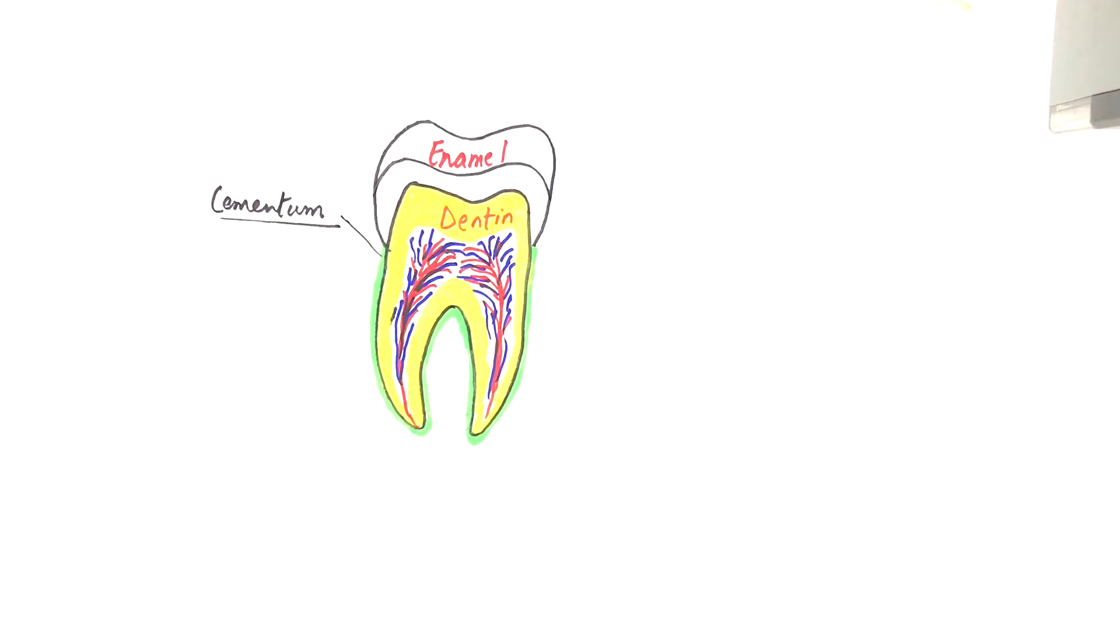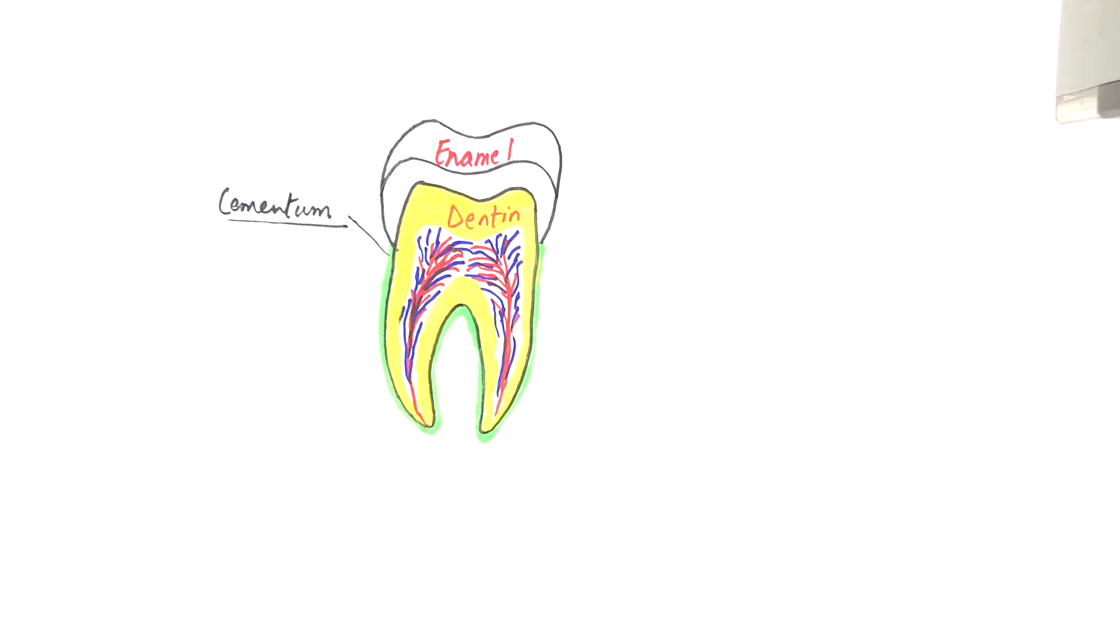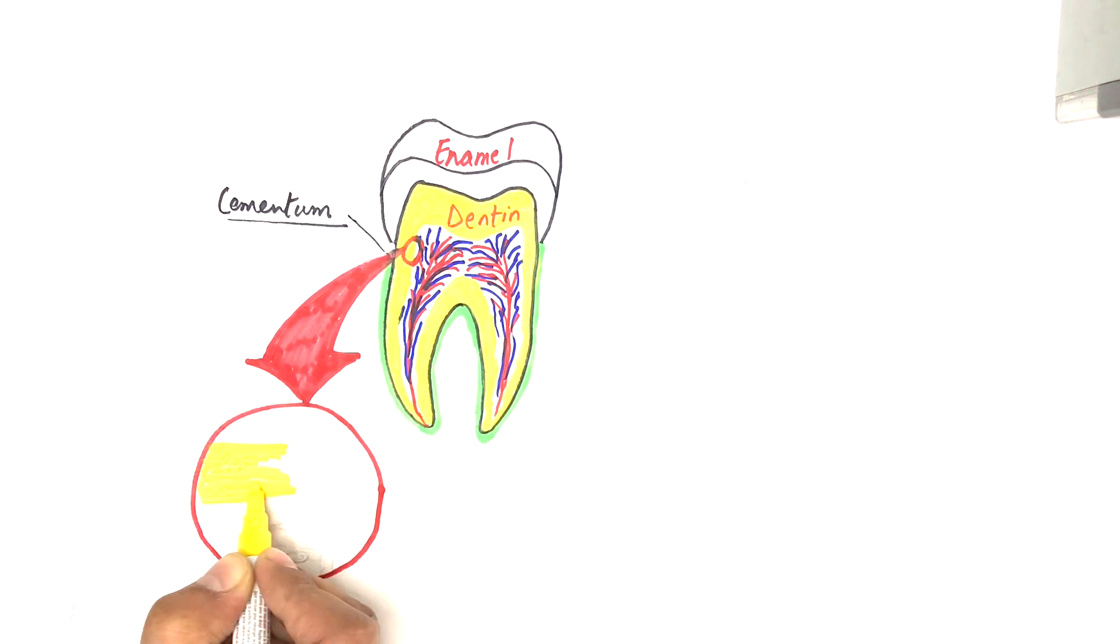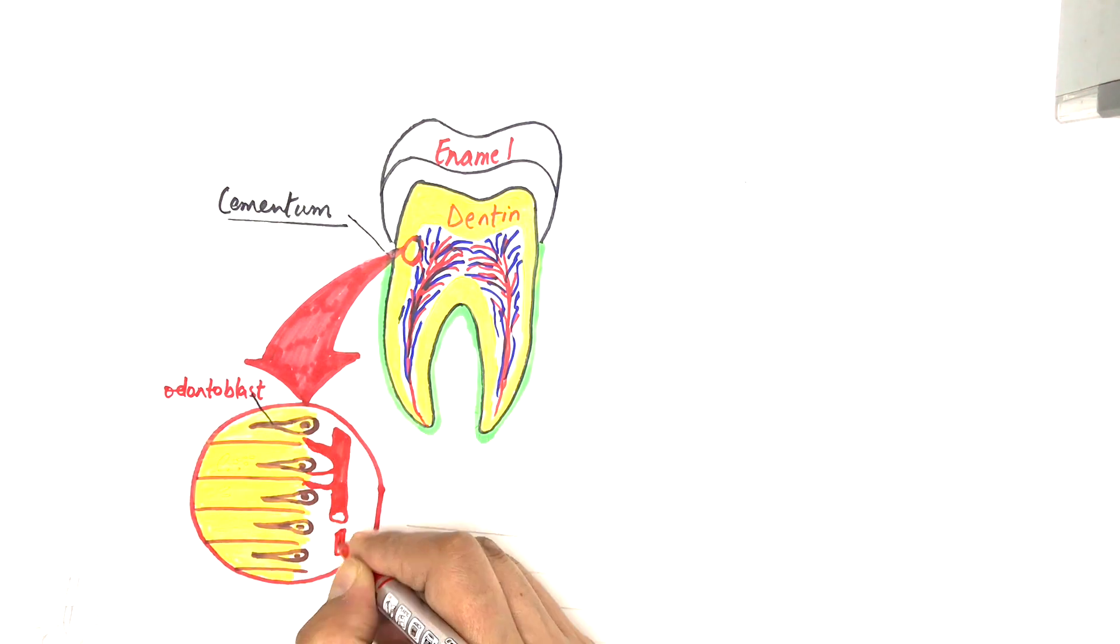If this barrier is damaged due to any reason, bacteria from the oral cavity easily get their entry into the tooth pulp either through the permeable dentinal tubules, such as in cases of tooth fractures where enamel or cementum is lost in a localized area.